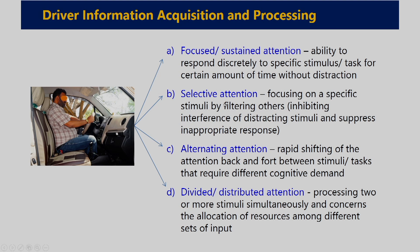The second type is selective attention — focusing on a specific stimulus by filtering others, inhibiting interference or disturbing stimuli, and suppressing inappropriate responses. In driving, the driver selectively attends to some stimuli while suppressing others. For example, while driving with primary attention on the road, the driver also selectively attends to other visual information such as road signage or searching for a particular shop on the roadside — attention selectively goes in that direction.